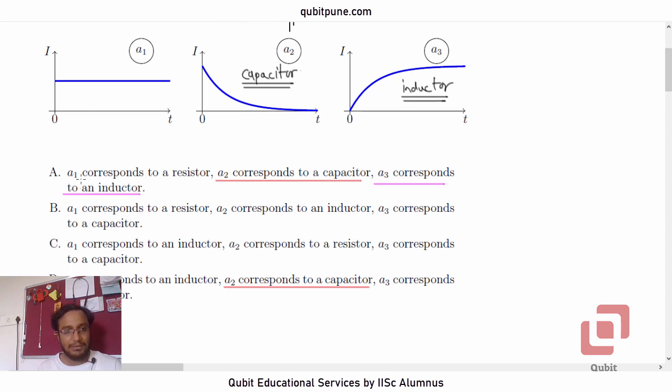So, that is option A. A1 corresponds to resistor, A2 corresponds to a capacitor, A3 corresponds to an inductor.